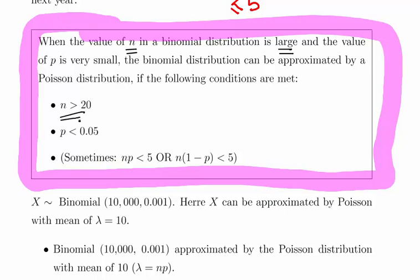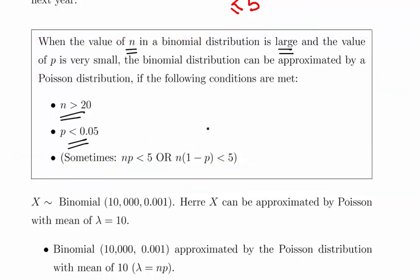n is greater than 20, that's definitely the case here. p is less than 0.05, that's the case here. In some other textbooks you might get different things like n has to be greater than 50 and p is less than 0.02. The point is not how you justify it, but just justify it.